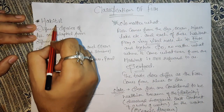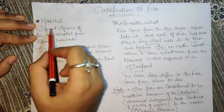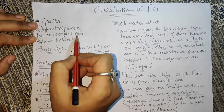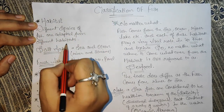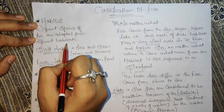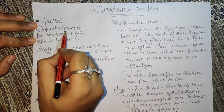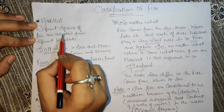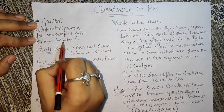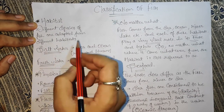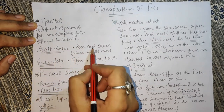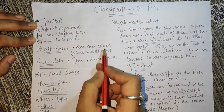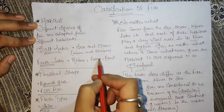This is habitat. Different species of fish are adapted from different habitats. Fish are adapted from different habitats — like seas and oceans, or rivers, lakes, and ponds. These are all the habitats.